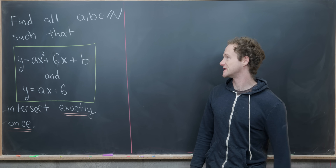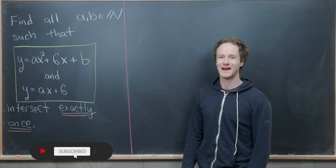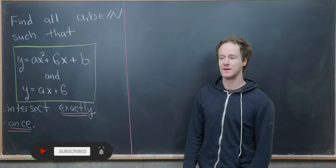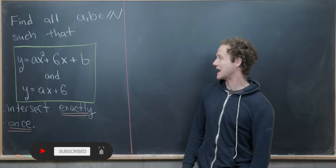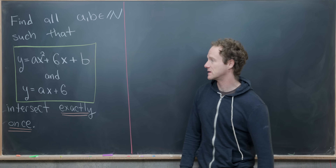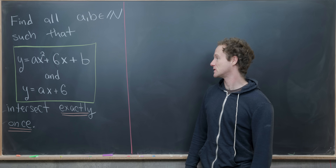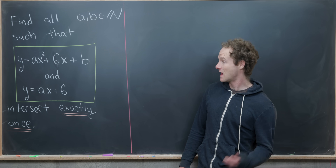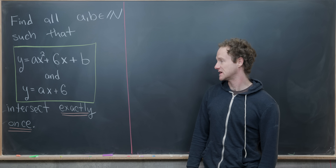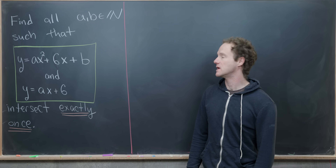Today we have a viewer-suggested algebra problem. Our goal is to find all natural numbers — positive integers a and b — such that the parabola defined by y = ax² + 6x + b and the line defined by y = ax + 6 intersect exactly one time.